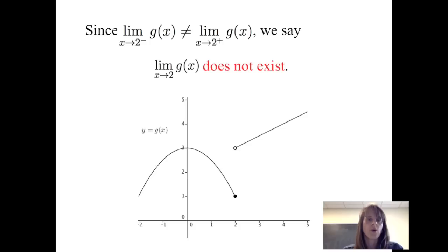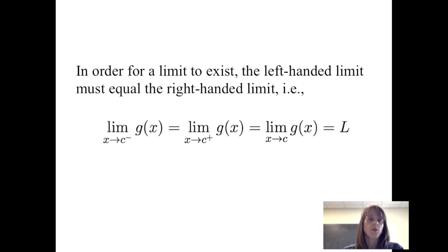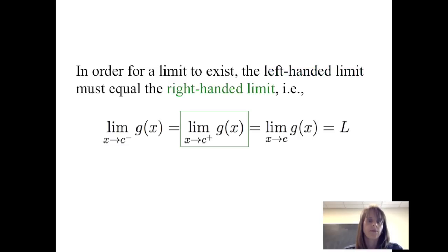Since the two one-sided limits are not equal, we say that the limit of g of x as x approaches 2 does not exist. So here we have an example where the two one-sided limits both exist, but the limit of g of x as x approaches 2 itself does not exist. In order for a limit to exist, the left-handed limit must equal the right-handed limit. When those two one-sided limits are equal, we say that the limit of g of x as x approaches c exists and is equal to that limit l.